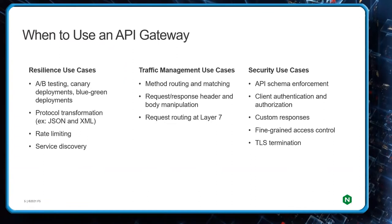Under resiliency, we see things like A/B testing, canary deployments, blue-green deployments, protocol transformation — for instance transforming a legacy SOAP or XML API to JSON bidirectionally — plus rate limiting and service discovery. Under traffic management use cases, we're looking at method routing and matching, and request and response header and body manipulation — pretty much anything dealing with OSI model layer 7. And then security use cases are in play as well, including API schema enforcement, authentication and authorization, custom responses, and TLS termination.